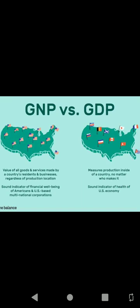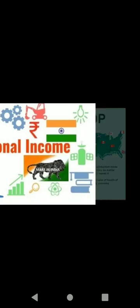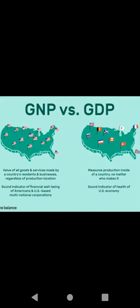Gross national product (GNP) is the total value of goods and services produced and income received in a year by domestic residents of a country — but inside the country, not outside. It includes profit earned from capital invested abroad. The formula for GNP is: GNP = C + I + G + (X − M) + NFIA.